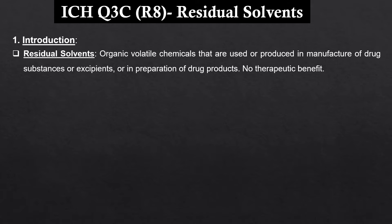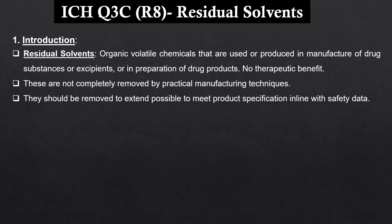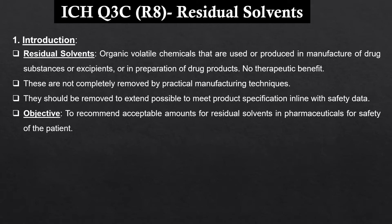Moving into the details of the ICH Q3 guideline — the introduction. Residual solvents are the organic volatile chemicals that are either used or produced in the manufacture of a drug substance or excipients, or in the preparation of the drug product. These solvents are of no therapeutic benefit; hence they are not completely removed by the practical manufacturing techniques employed during production. Thus, they should be removed to the extent possible to meet the product specification in line with the safety data. The objective of this guideline is to recommend acceptable amounts of residual solvents in pharmaceuticals for the safety of the patient.